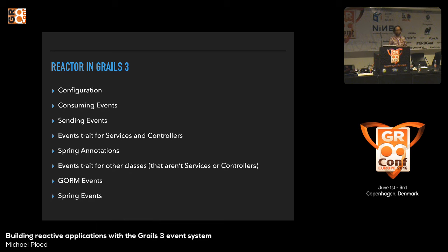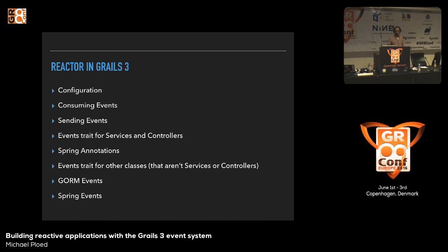Something I use very regularly for consuming events are services — there's a trait for that. There are Spring annotations for Reactor that are really very easy to use, and in my eyes are the preferred way of dealing with the event system in Grails. There is also an Events trait for other classes that aren't services or controllers — if you just have a Groovy or Java class in src/main/groovy, you can even hook them up with the event system. GORM and Spring also fire off events that you can react on as well.